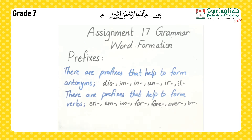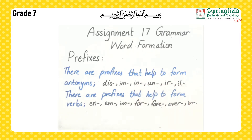There are prefixes that help to form antonyms, meaning opposites. These include: dis, im, un, ir, and ill. These letters are added to root words to make antonyms. There are also prefixes that help to form verbs: em, for, over, and in. When we use these letters with root words, the words formed are normally verbs.